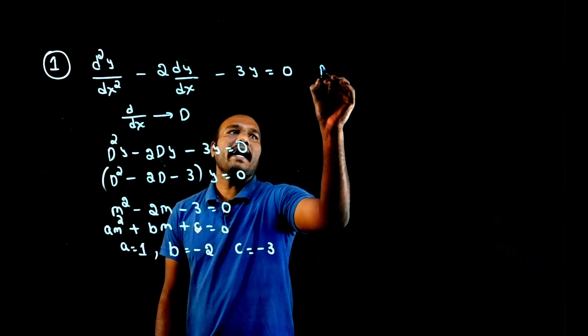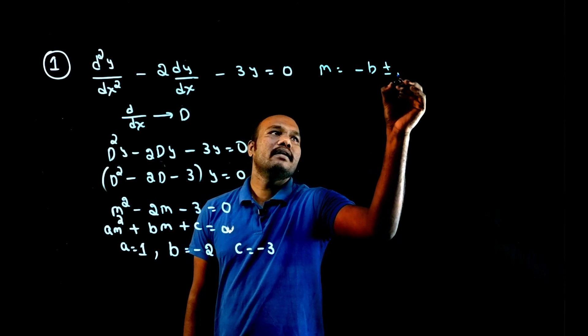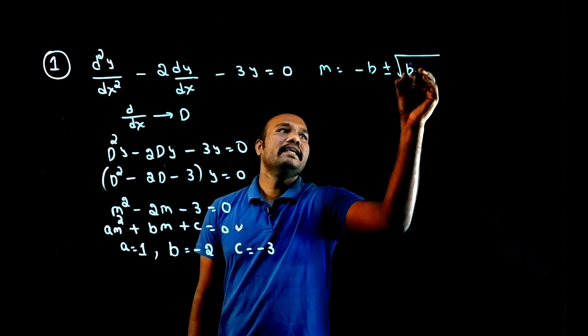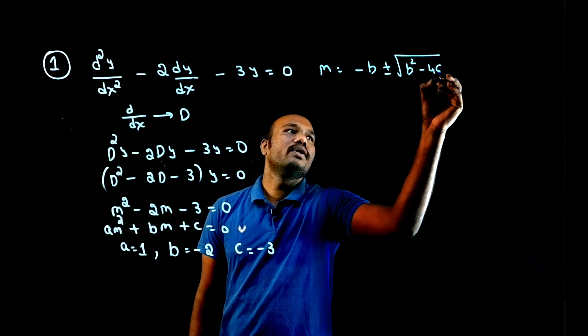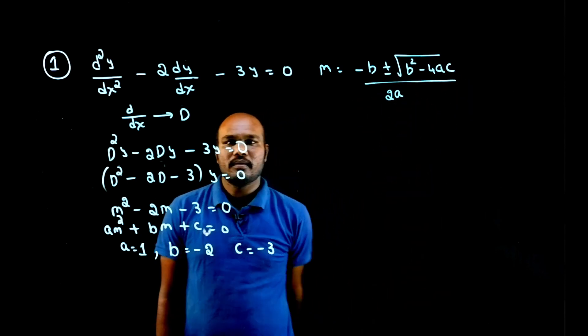A value is 1, b value is minus 2, c value is minus 3. What is the formula? To know m value, the formula is minus b plus or minus root over b square minus 4 into a into c divided by 2 times a.